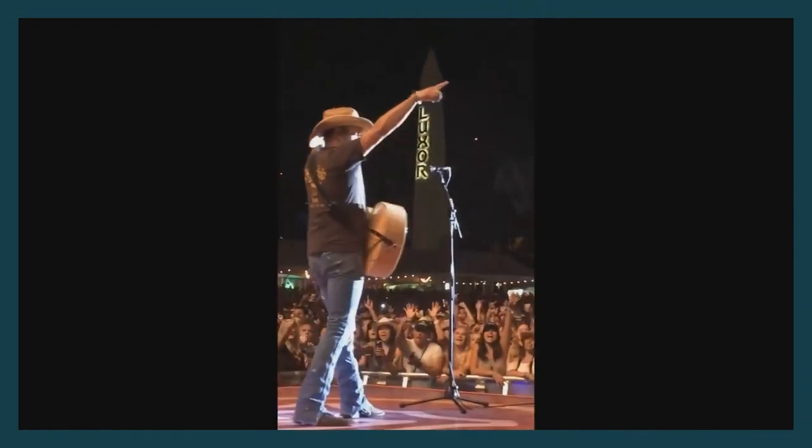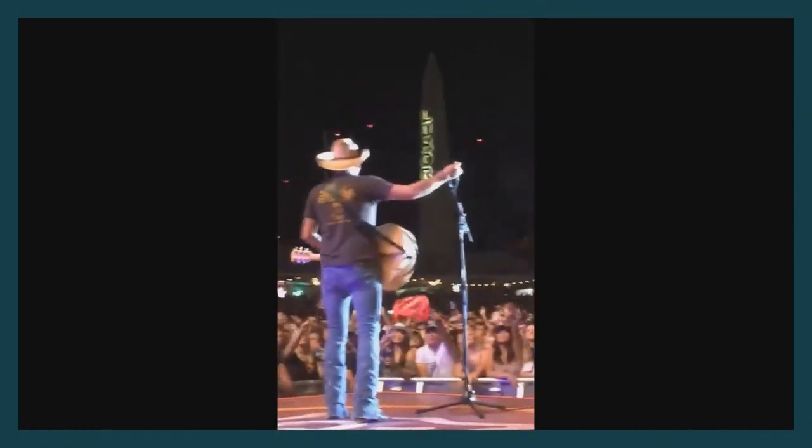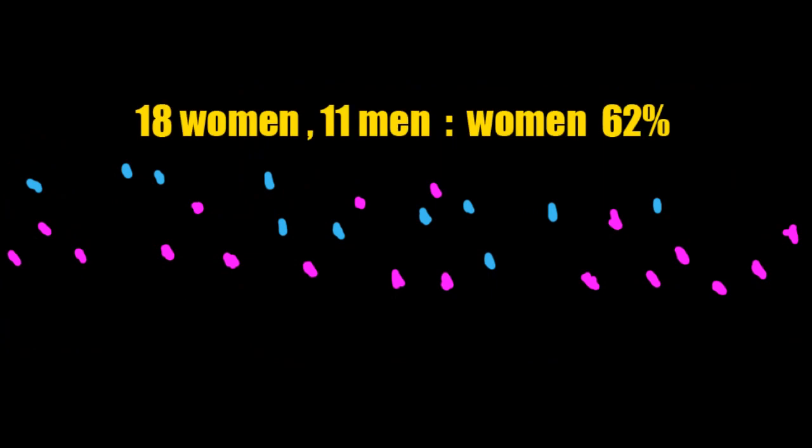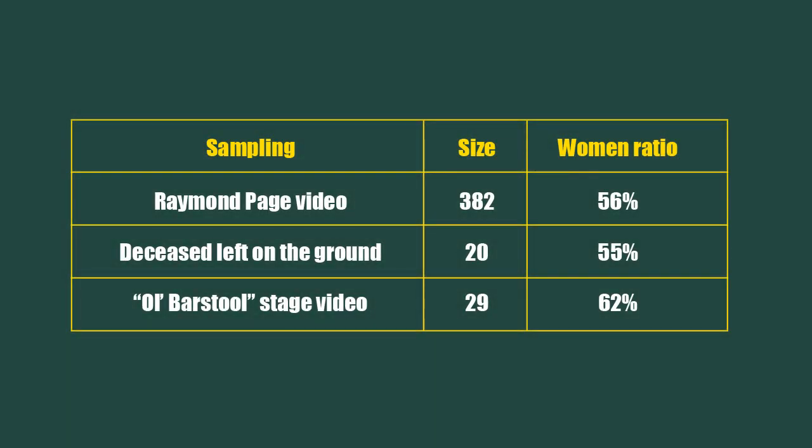Let's illustrate this with video clips. This is a recently posted clip showing the audience near the stage. We can use frames from this clip to create a single composite image with as many visible faces as possible. Counting people, we get 18 women and 11 men, for a women-to-men ratio of 62%. The Raymond Page video shows 56% women. Among the deceased left on the ground near the stage, women are 55%. In the barstool clip just shown, women are 62%. So which of the two random samples is more representative of the audience targeted by the shooter — the deceased, or the audience near the stage? We don't know. The fact that the ratio among the deceased is closer to the gender ratio in the audience doesn't mean anything, because women may have been 62% of people near the stage, in which case the stage sample would be more accurate.